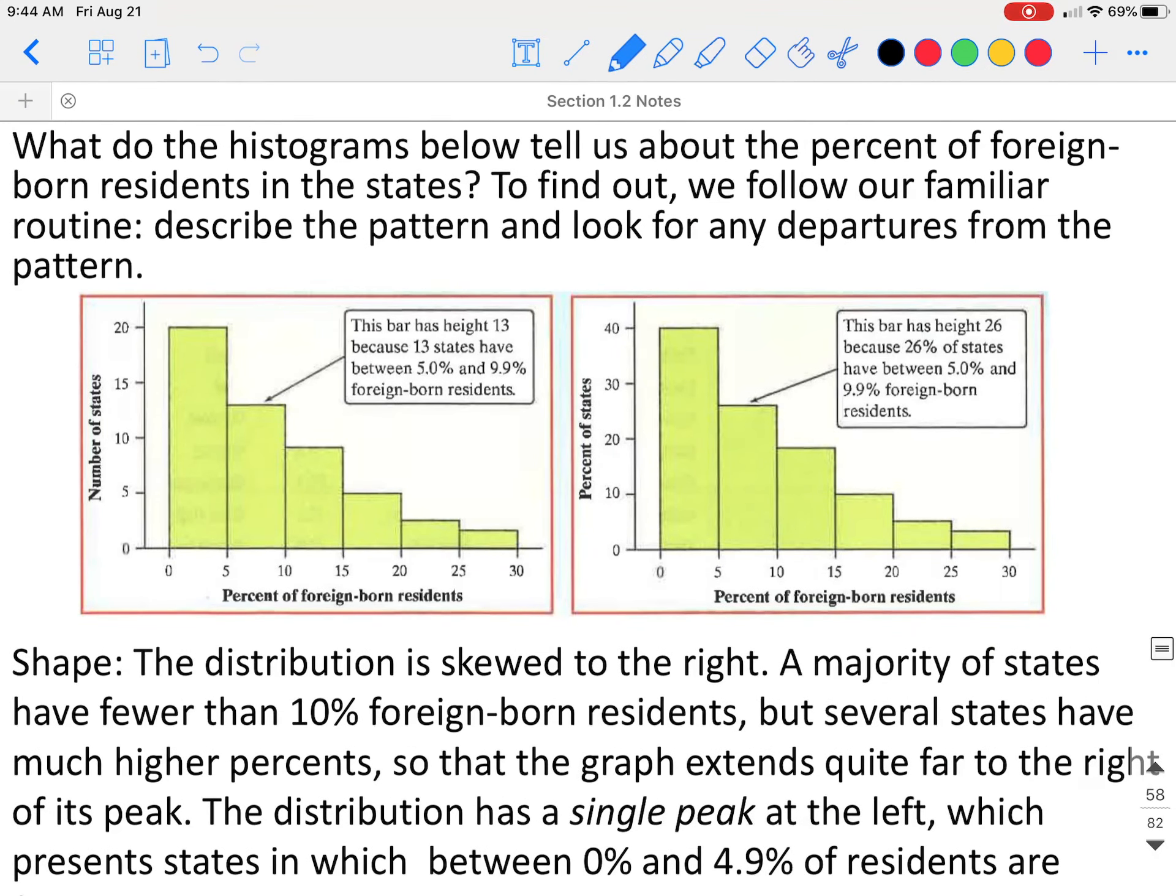What do the histograms below tell us about the percent of foreign born residents in the states? To find out, we follow our familiar routine. You're going to discuss the pattern and any departures from that pattern. If we look at the shape first, the shape of the distribution is definitely skewed to the right.